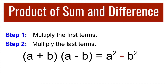Step 1, multiply the first terms. And step 2, multiply the last terms. So if you have (a + b) times (a − b), all we need to do is multiply the first terms a and a, which is a squared. And step 2, multiply the last terms b and negative b, which is negative b squared.